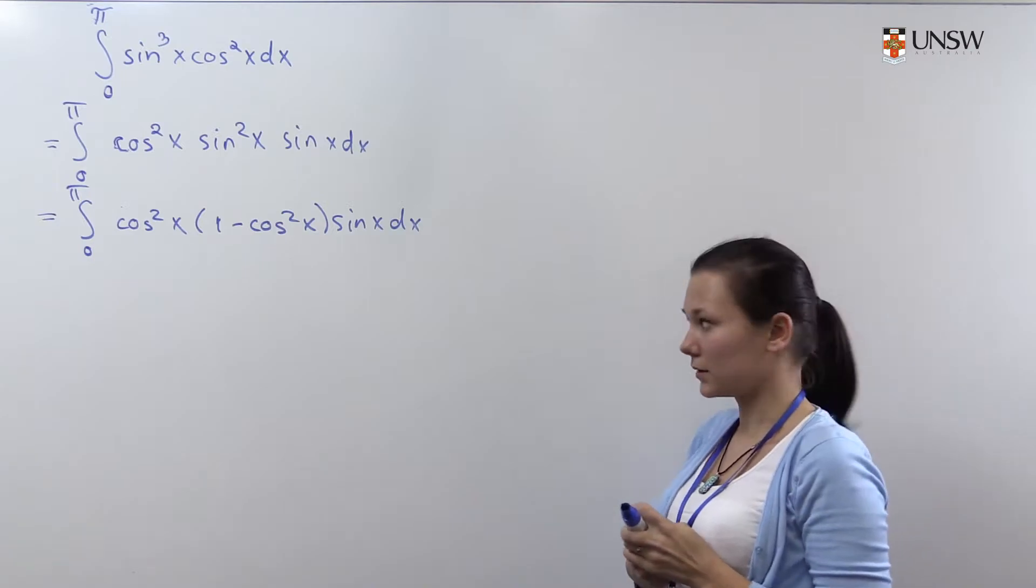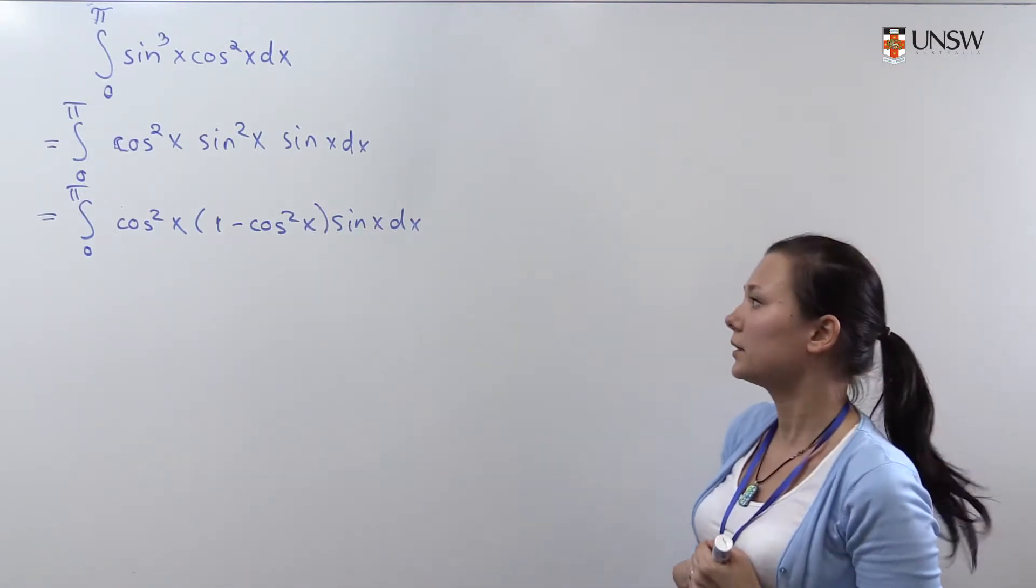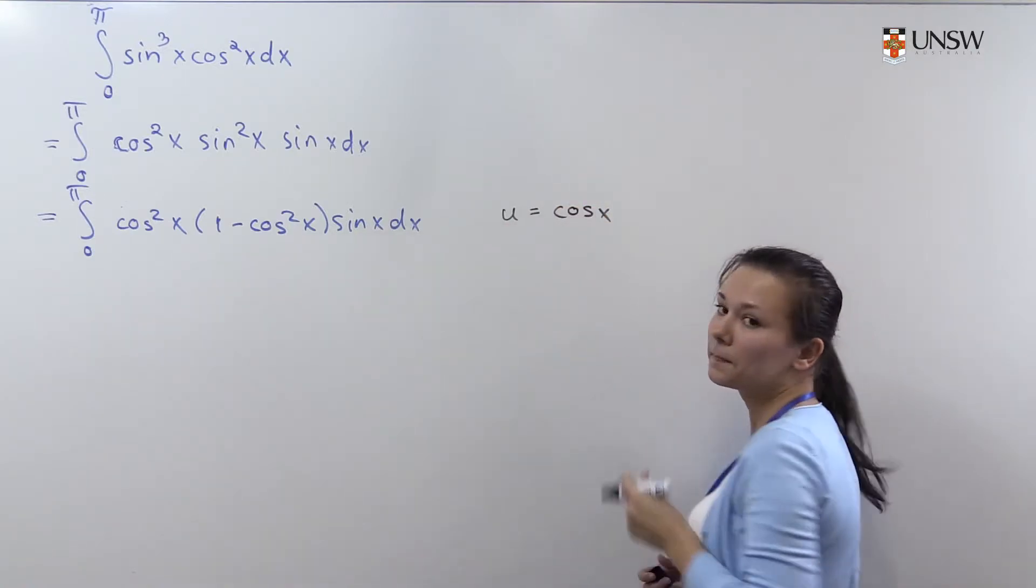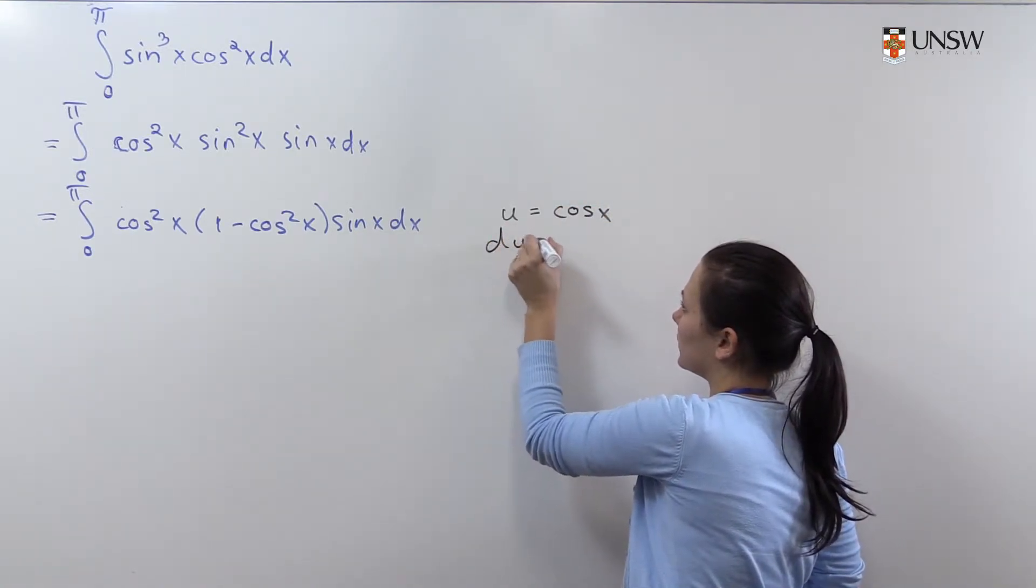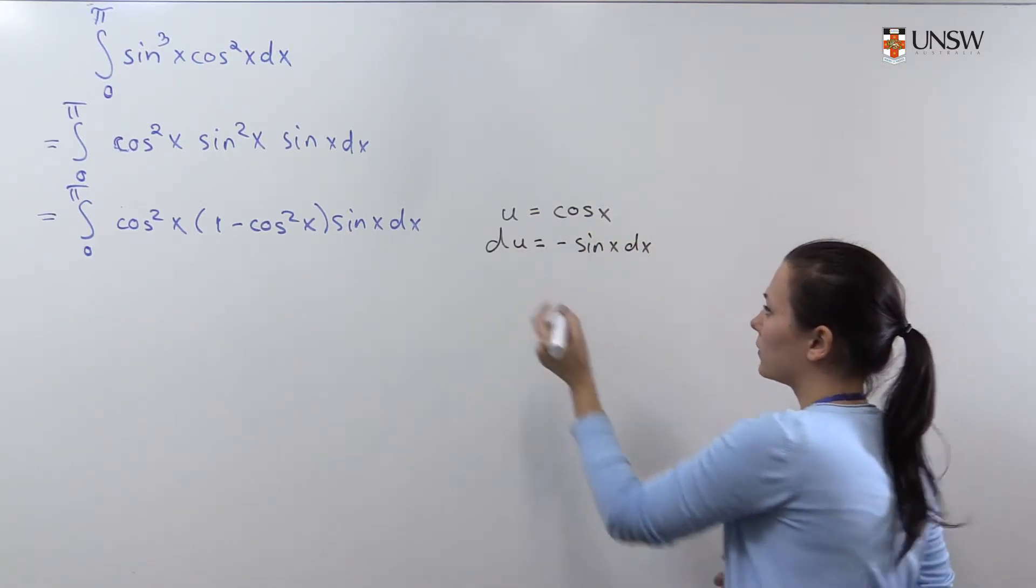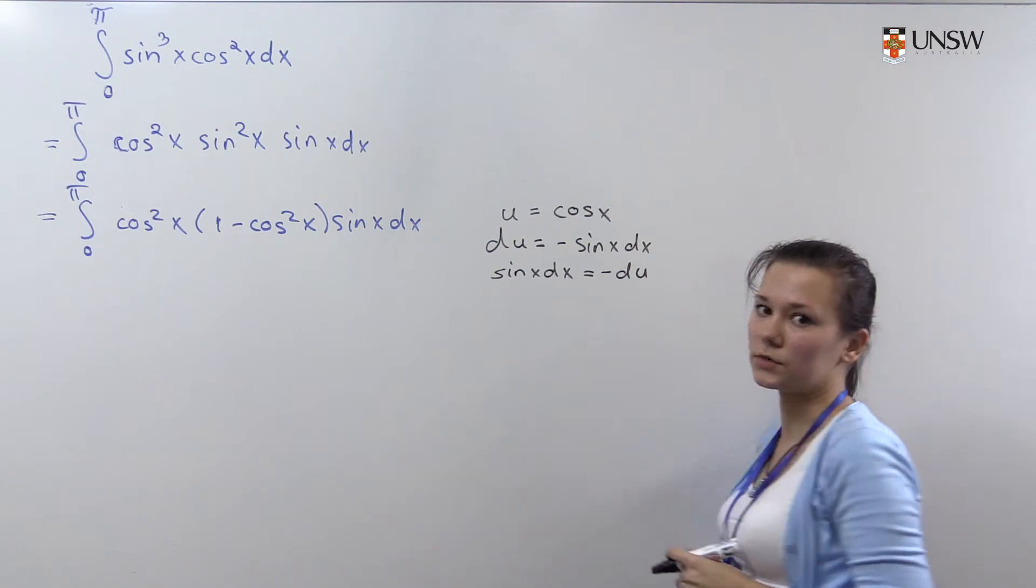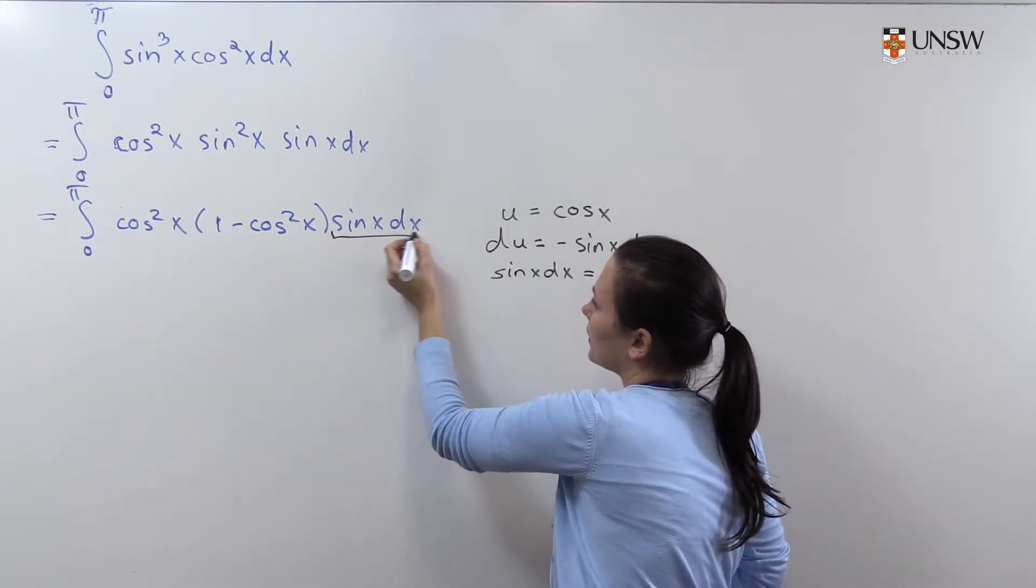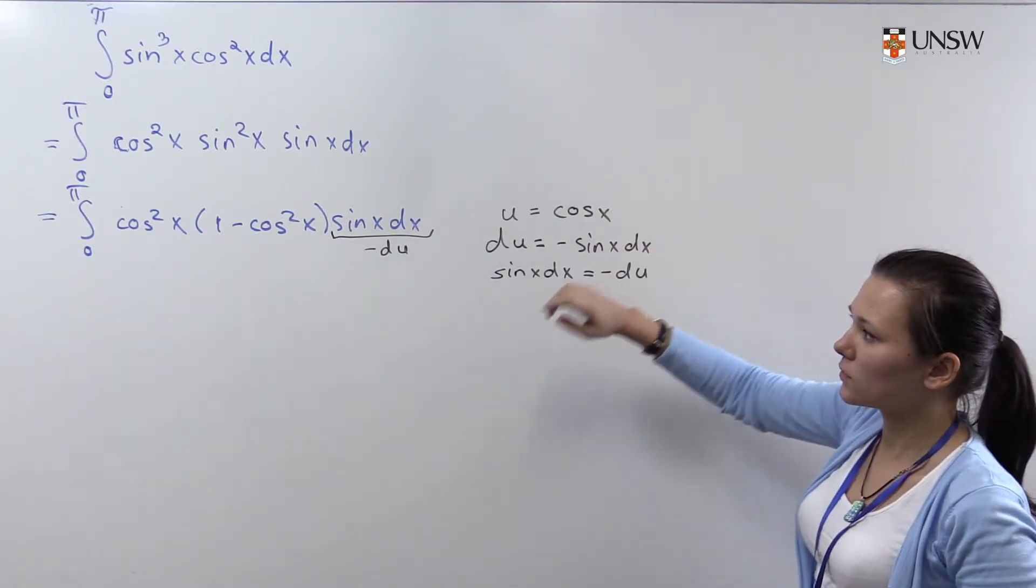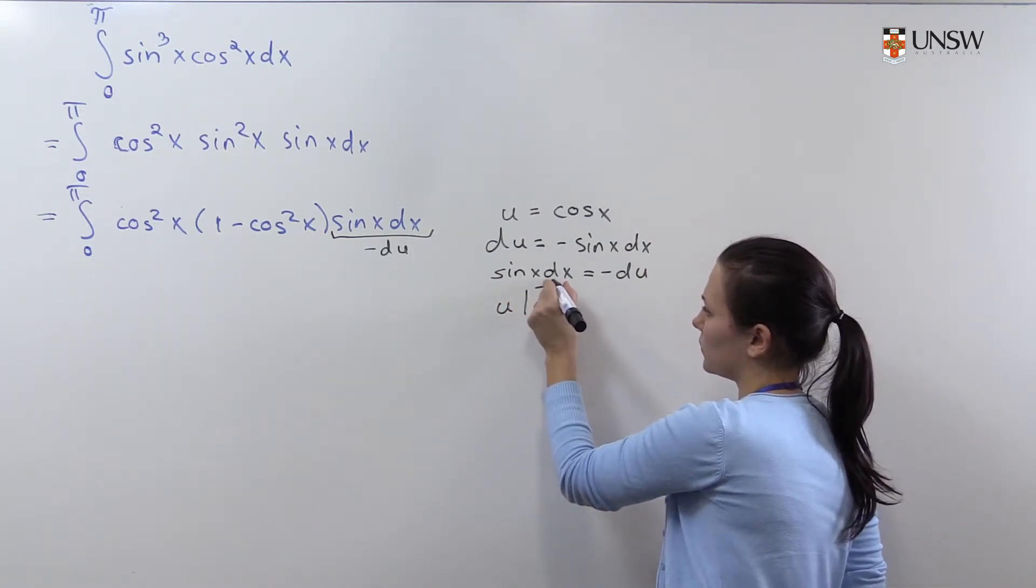Now we will make the substitution, namely u equals cos x. Then du will be minus sine x dx, and therefore sine x dx will be just minus du. The x varies from 0 to π, and therefore u will be varying from 1 to minus 1.